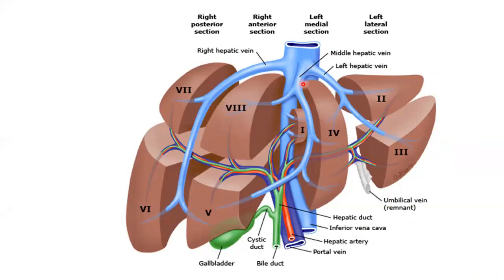According to the Couinaud classification, the liver is divided by the plane of the middle hepatic vein, also called the principal plane. This principal plane divides the liver into right and left parts. This plane, also called Cantlie's line, runs from the inferior vena cava to the gallbladder.